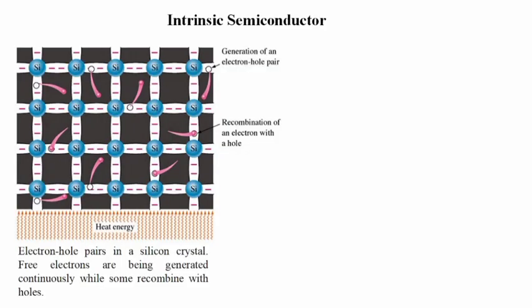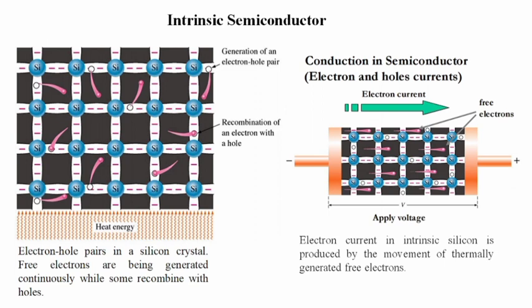In an intrinsic semiconductor such as silicon, silicon has four electrons and their bonding is covalent bonding. At T equal to zero, all the electrons are bound in covalent bonds and no charge carriers are available for conduction. A pure semiconductor is called an intrinsic semiconductor — here no free electrons are available since all the covalent bonds are complete. At absolute zero temperature there is a vacant conduction band, so electrical conduction is not possible. A pure semiconductor behaves like an insulator at zero Kelvin.